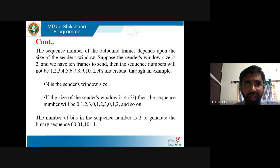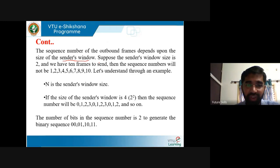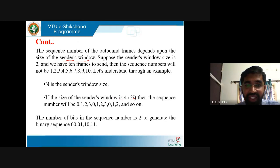Consider this example: the sequence number of the outbound frames depends upon the size of the sender's window. If the sender's window size is 4, you can represent that as 2 to the power of 2. This 2 is the number of binary bits in the sequence number. So if the sender's window size is 4, representing it as 2², the sequence numbers will be 0, 1, 2, 3, 0, 1, 2, 3, and so on. The number of bits in the sequence number is 2, generating the binary sequence: 00, 01, 10, 11 — that is 0, 1, 2, 3.